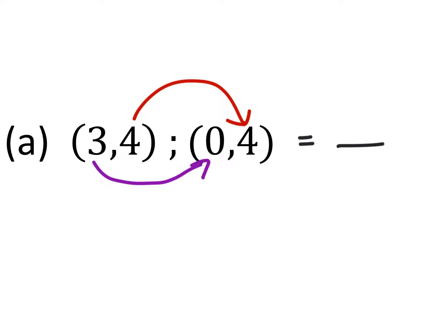For example, how far is it to go from 4 to 4? You'd have to add 0, which gives us our numerator. In the denominator, to go from 3 to 0, you'd subtract 3, giving us 0 over negative 3. That gives us a total value of 0, which is our slope.